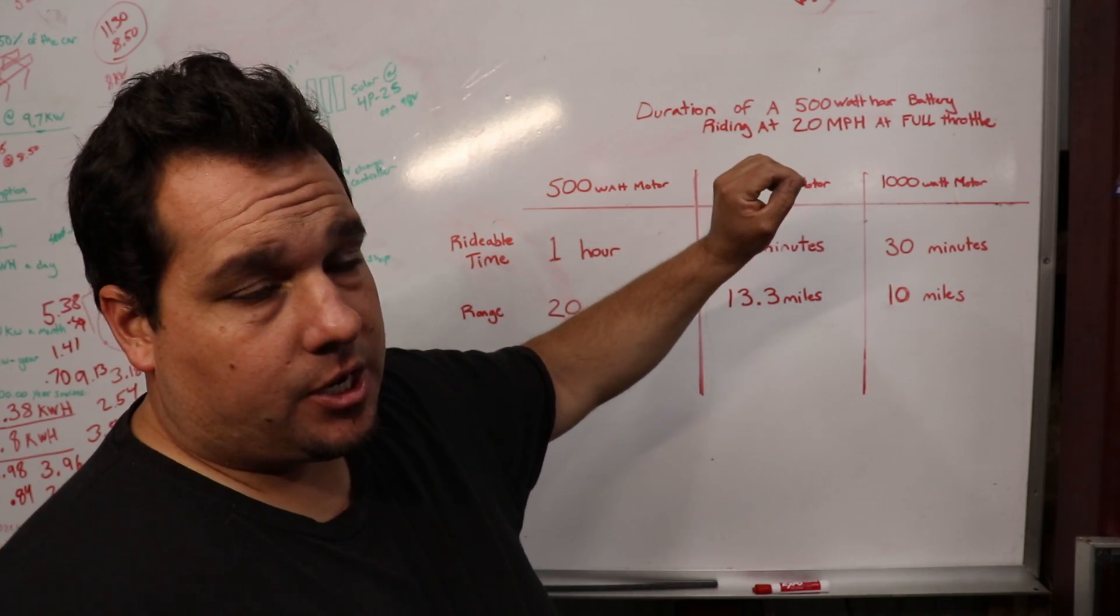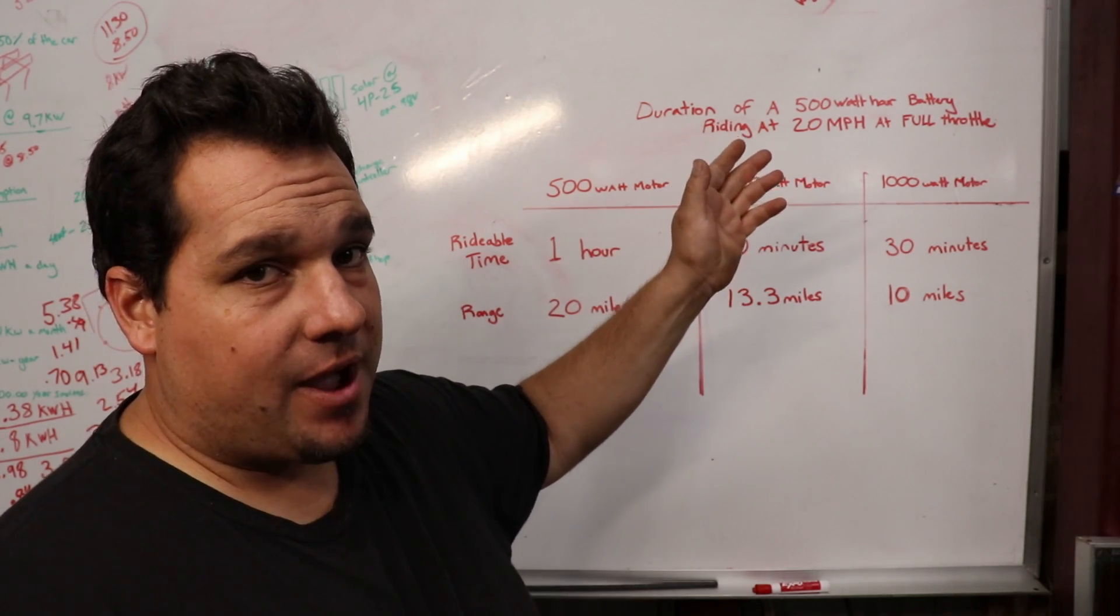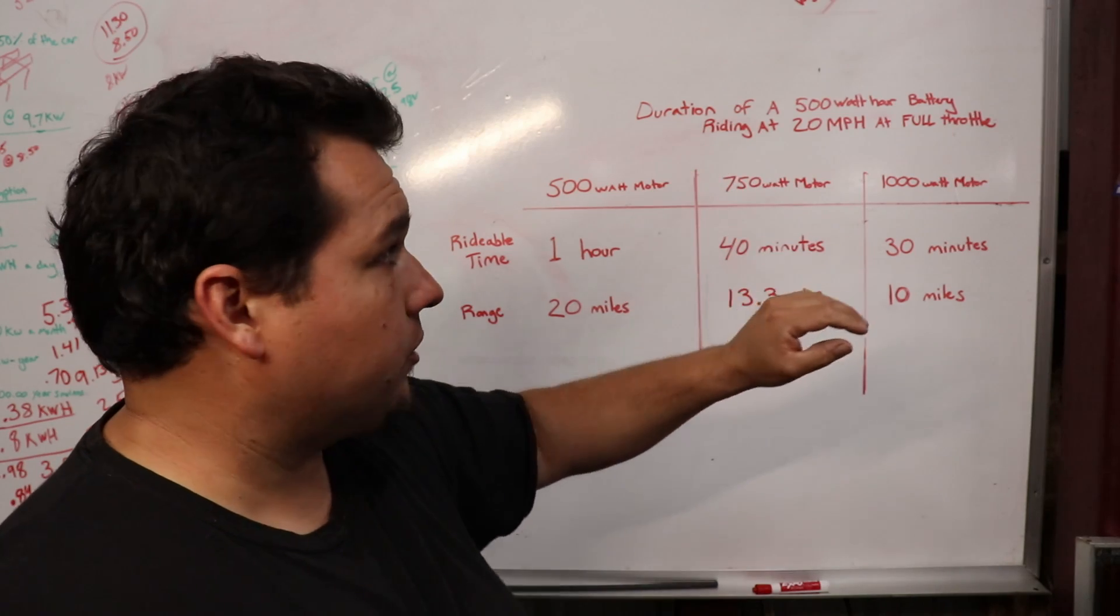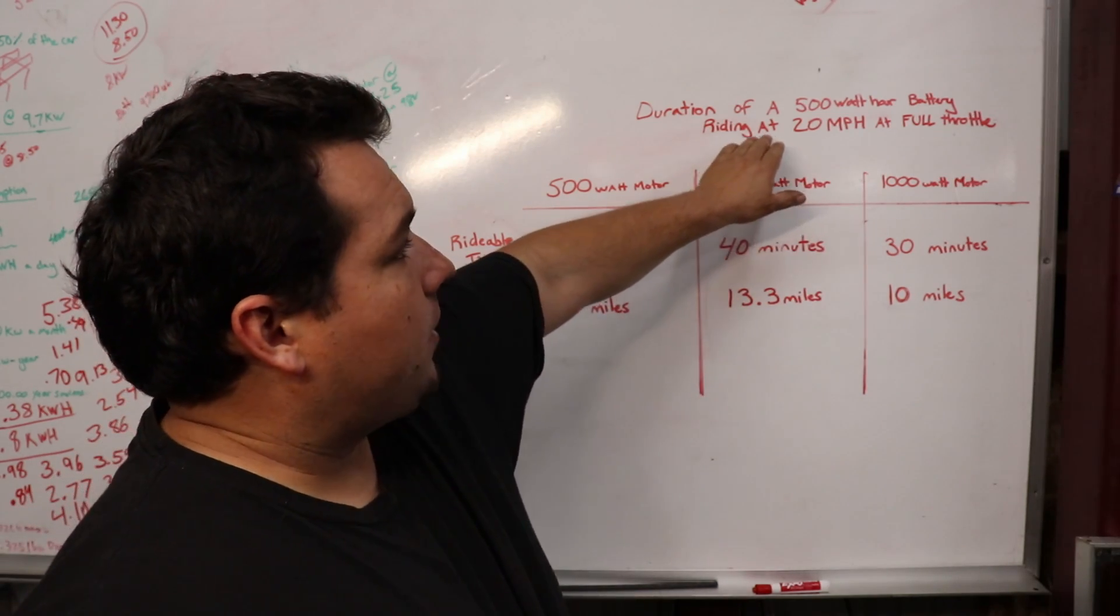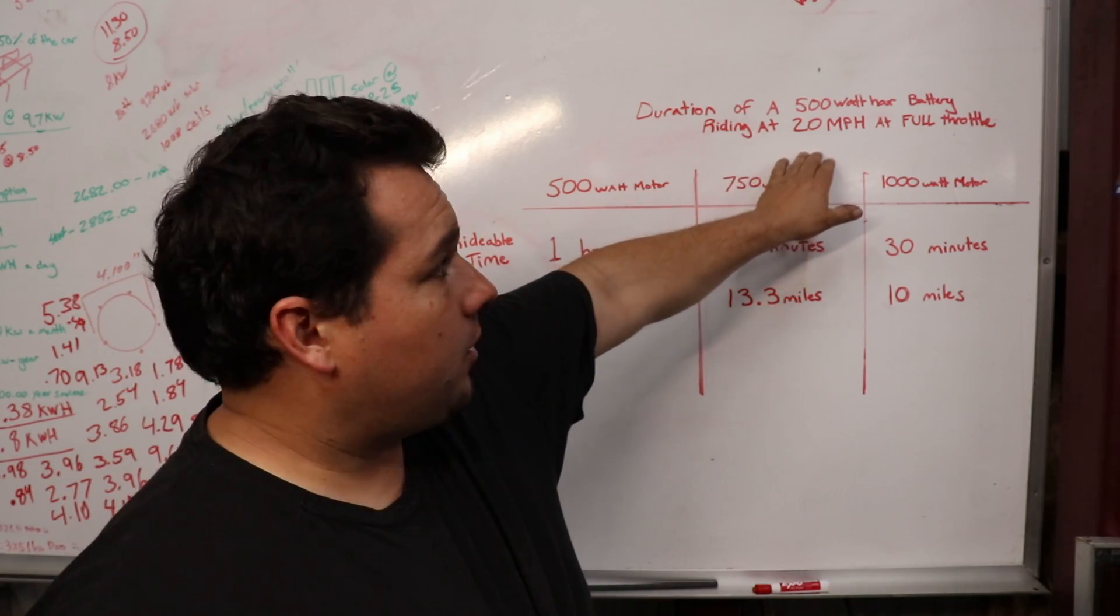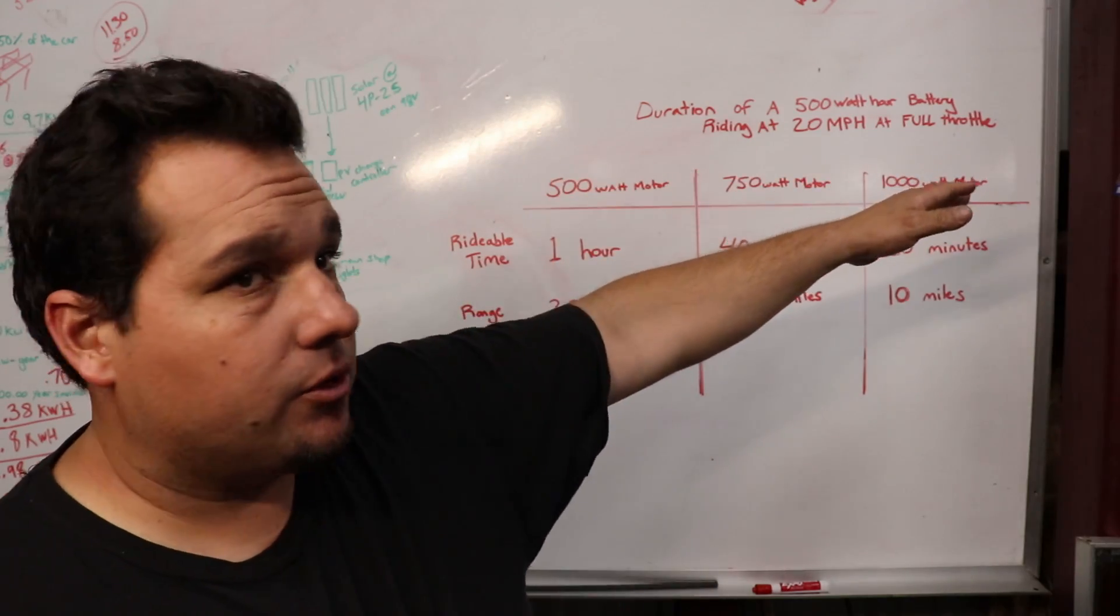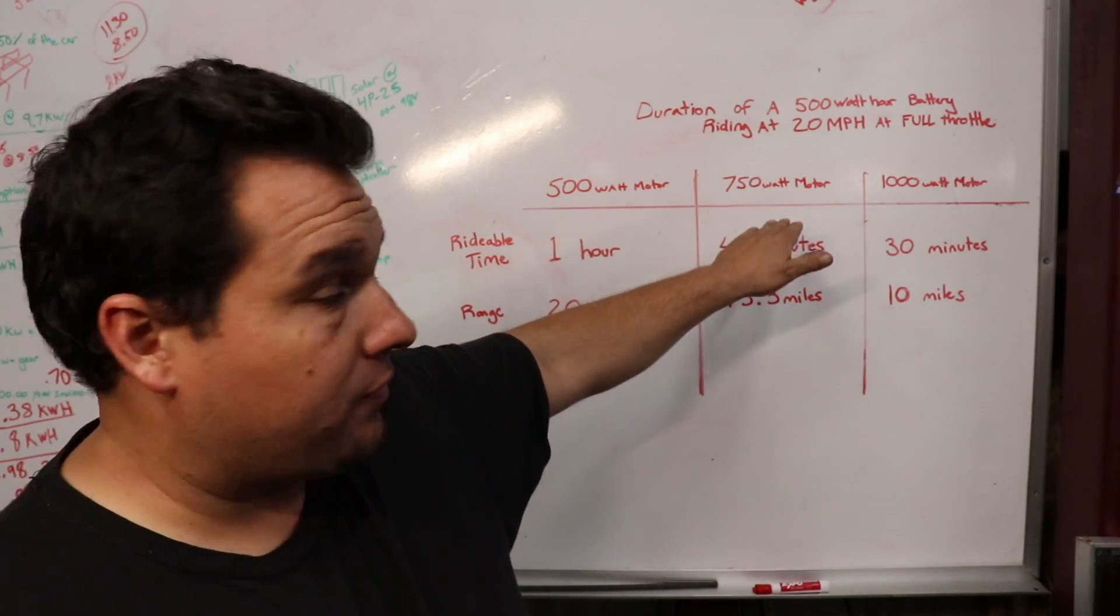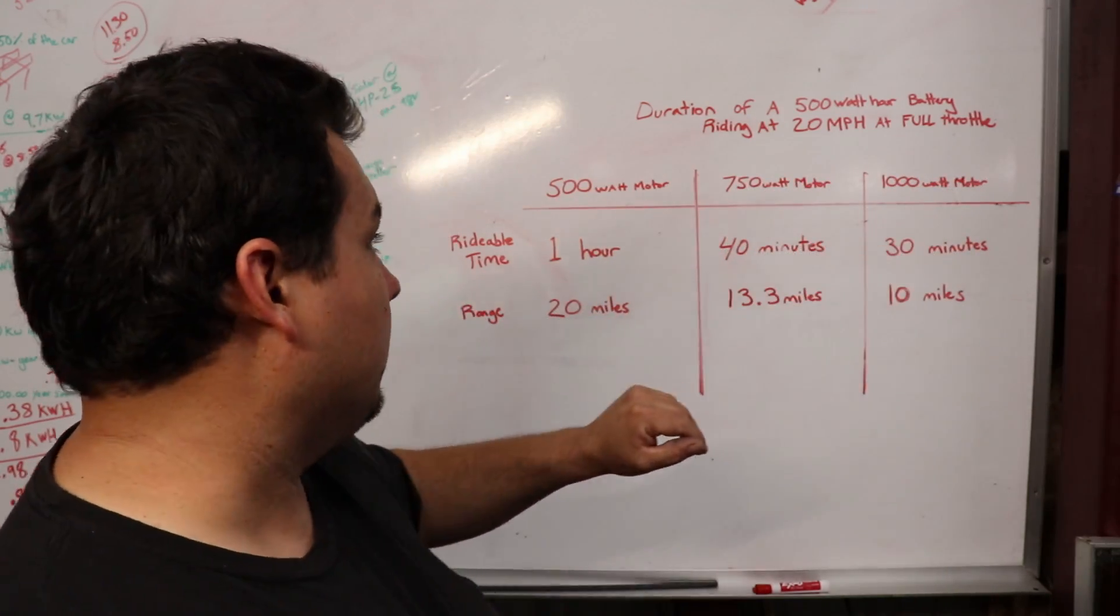and you're riding at 20 miles an hour at full throttle. Now, that's given all the electric motors here, the 500-watt, the 750-watt, and the 1,000-watt motor.